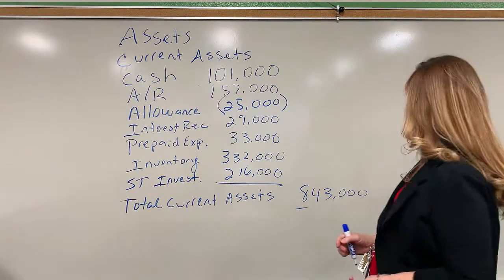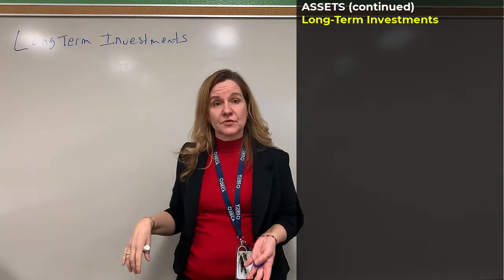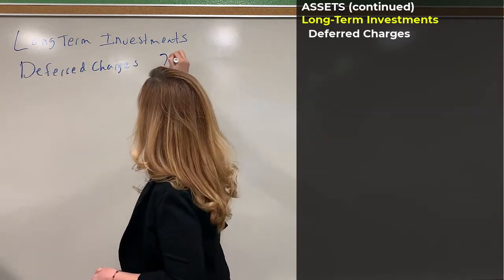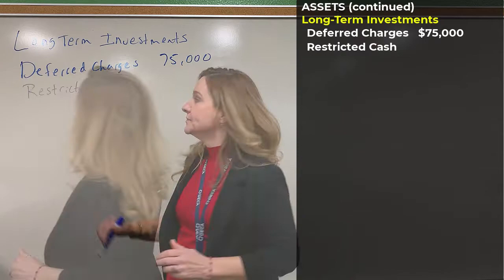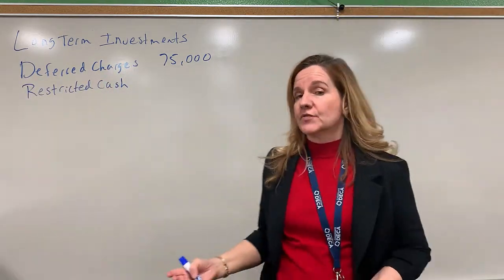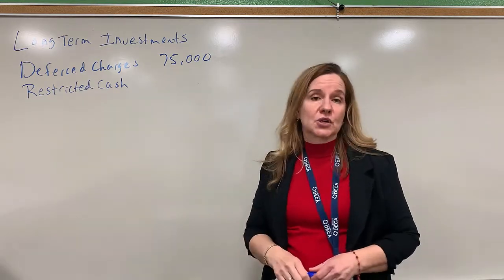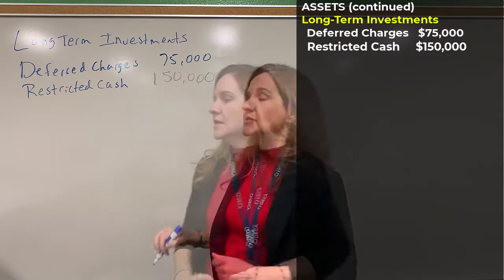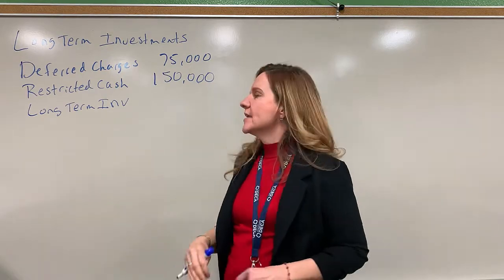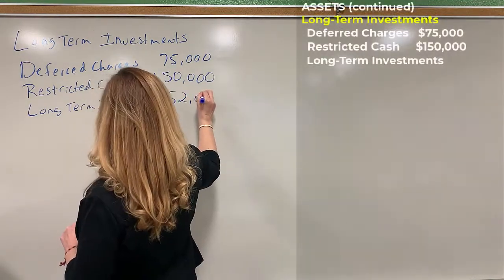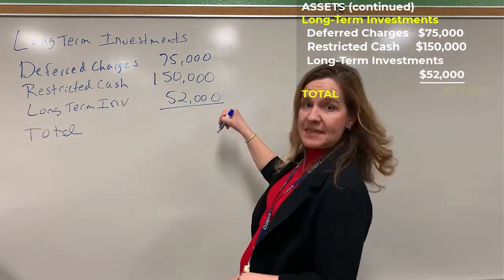Now we're going to move on to the next category: long-term investments. The first long-term investment we have is deferred charges for $75,000 — a deferred charge is just a long-term prepaid. The next one is restricted cash. Whenever cash has been restricted for anything long-term, say it's restricted to pay long-term debt, it needs to be categorized as a long-term investment. Our restricted cash is $150,000. Then we have long-term investments — a lot of times those are bonds purchased from other companies that mature longer than a year — for $52,000. We total that up to $277,000.